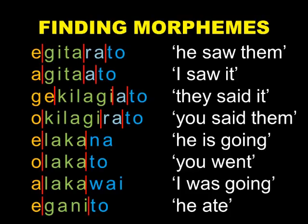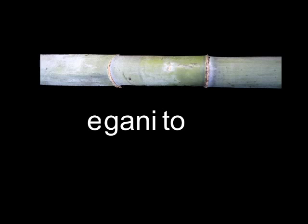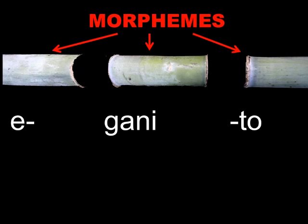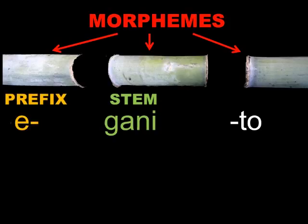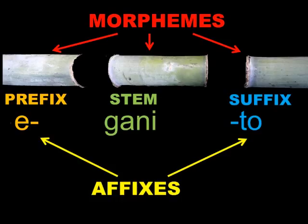Take some time to think about your own language and how you can split words up into different morphemes. Let's review the concepts in this lesson. Words can often be broken up into different morphemes. The main morpheme with a lexical meaning is called the stem, base, or root. Morphemes coming before the stem are called prefixes. Morphemes coming after the stem are called suffixes. Sometimes, prefixes and suffixes together are called affixes.